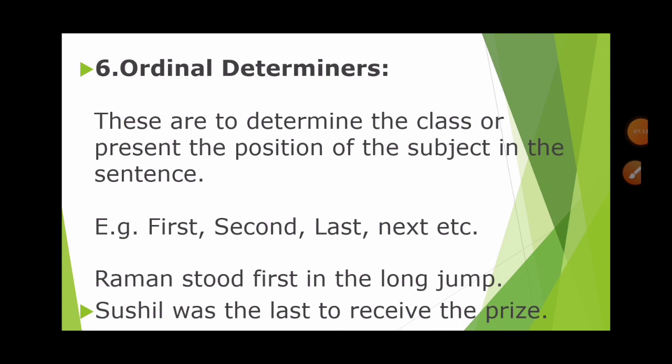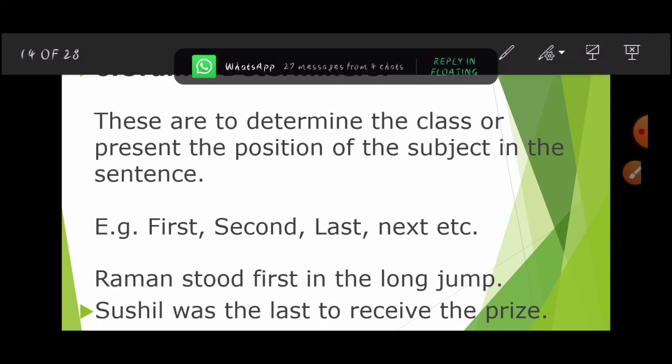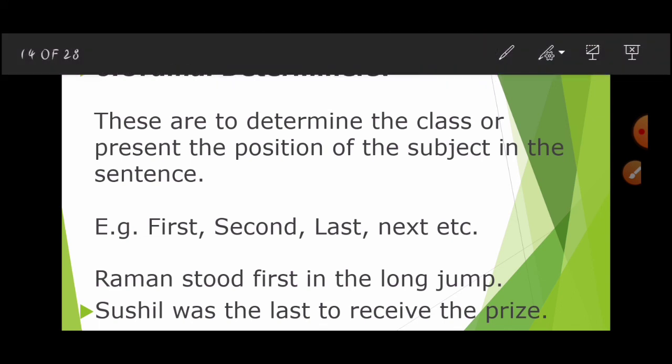The last type is ordinary determinants. These are used to determine the class or present the position of the subject in the sentence — deciding positions like first, second, last, next. For example, 'Raman stood first in the long jump' — here 'first' is the ordinary determinant, and the subject is Raman.